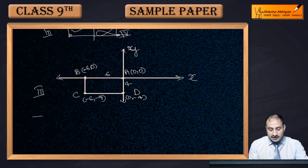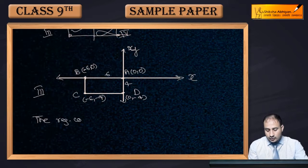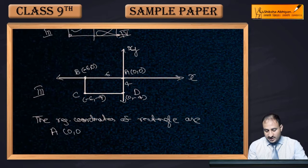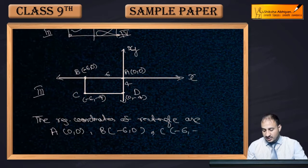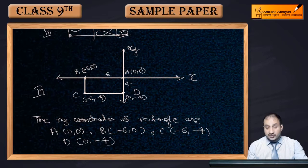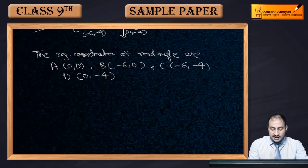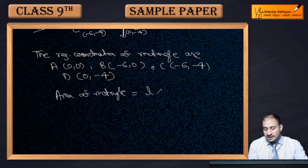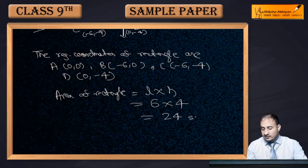The required coordinates of the rectangle are: A = (0, 0), B = (-6, 0), C = (-6, -4), and D = (0, -4). Now for the area: area of rectangle = length × breadth = 6 × 4 = 24 square units.